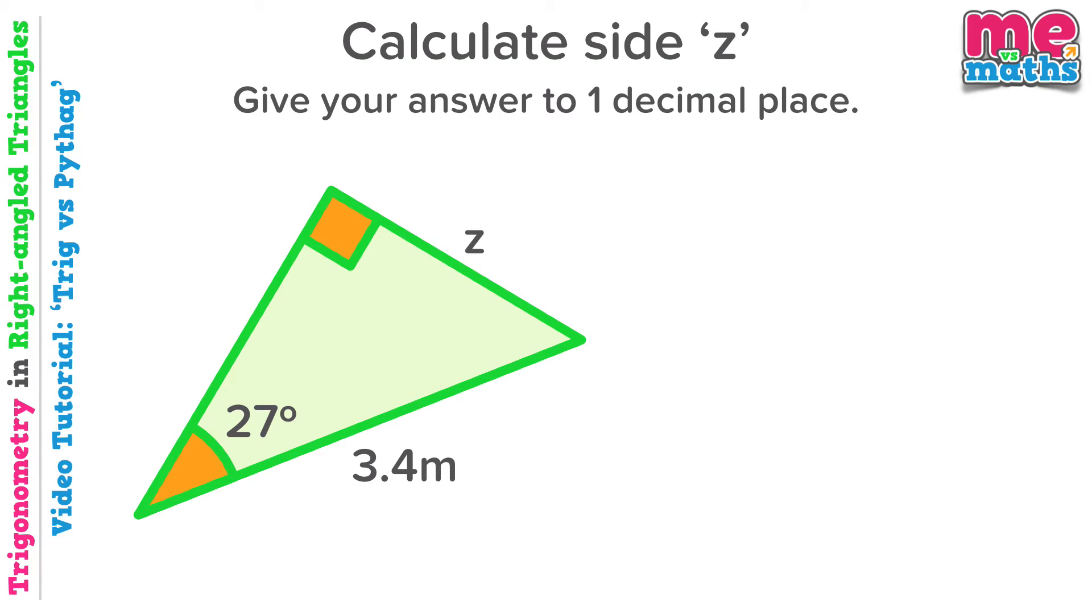Our next question again asks us to find a side, so it could be another Pythagoras question. But if we look at the information we've been given, we can see this time there's a given side and a given angle.